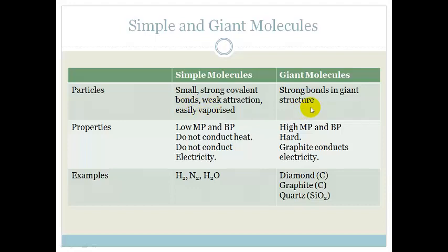Giant molecules have got strong bonds in giant structures. And we know, for example, that diamond is not easily vaporized. Simple molecules can have a low melting point and boiling point. They do not conduct heat or electricity.